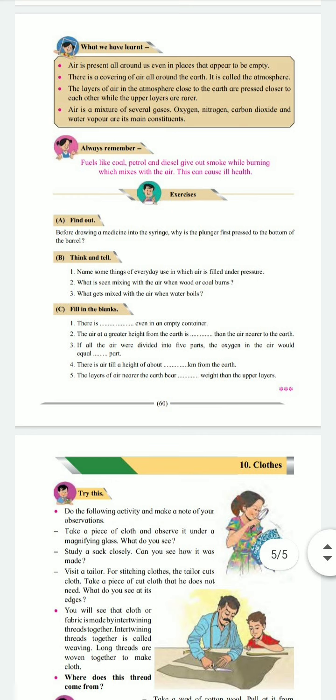Fill in the blanks. There is blank even in an empty container. The air at the greatest height of the earth is blank than the air nearer to the earth. If all the air were divided into five parts, the oxygen in the air would equal blank part. There is air till a height of about blank kilometers from the earth. The layers of air nearer the earth bear blank weight than the upper layers.